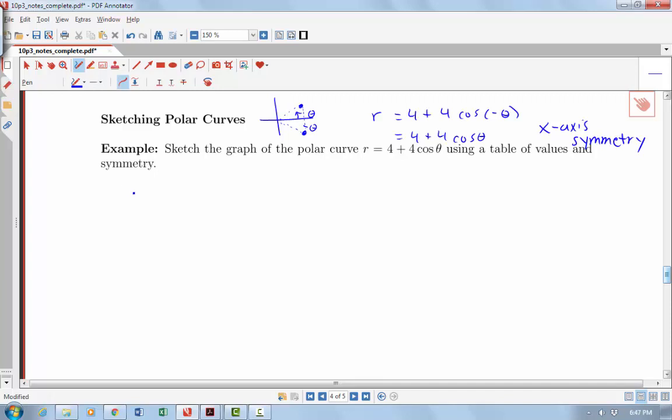Let's make our table of values. I have theta and r here. I'll do theta here at 0, pi over 3, pi over 2, 2 pi over 3, and pi. When theta is 0, I know that cosine of 0 is 1, so this will be 8. At pi over 3, it's 1 half, so I get 6. At pi over 2 it's 0, so this is 4. At 2 pi over 3, it would be negative 1 half, so this would be 2. And at pi, cosine of pi is negative 1, so I'd have 4 minus 4, so I get 0 here.